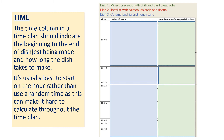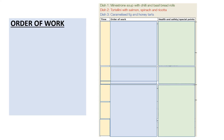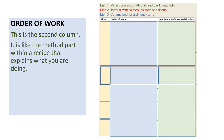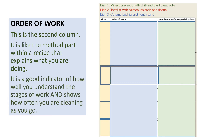The second column is order of work — this is the method part that explains what you're doing. It's like a method within a recipe: a good indicator of how you understand the stages of your working, how well you're working, how often you're cleaning, and how often you're setting up other equipment for other parts of the recipe.